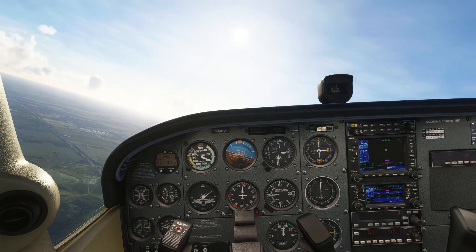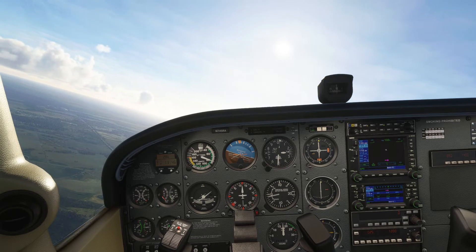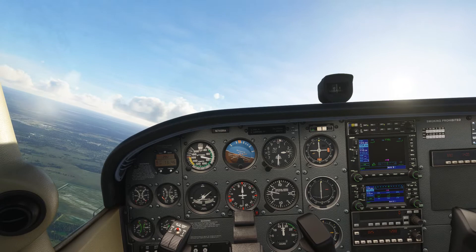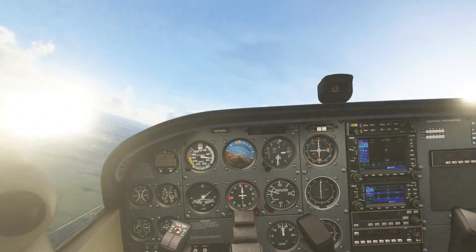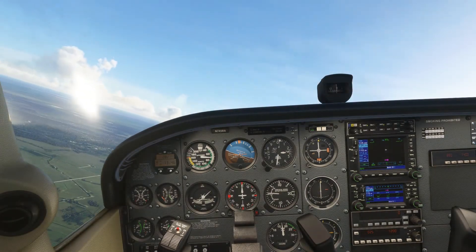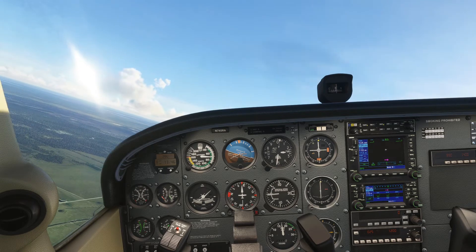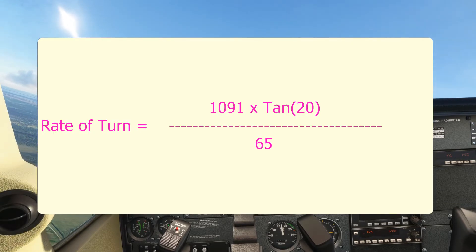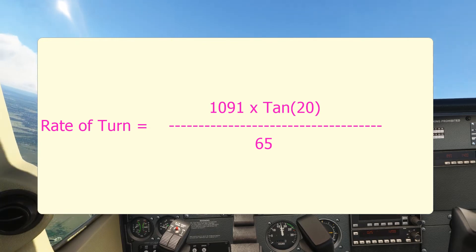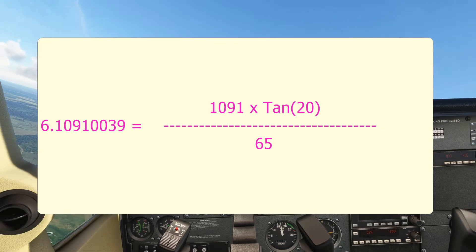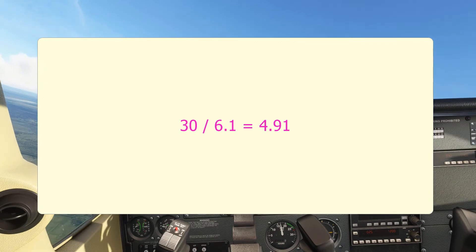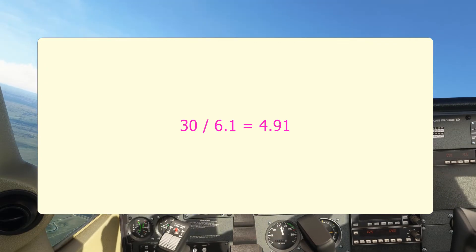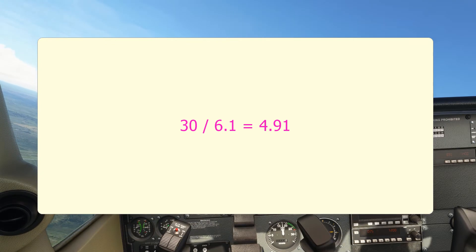My plan is to slow the aircraft down to around 60 knots indicated airspeed, which would be around about 65 knots of true airspeed. So let's do the calculation to see how long it should take us to pass through 30 degrees at that airspeed. We take 1091, multiply it by the tangent of 20, and divide it by 65 — that gives us just over 6.1 degrees per second. So at a rate of 6.1 degrees per second, passing through 30 degrees should take us just under 5 seconds.